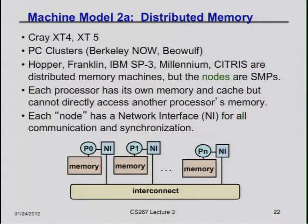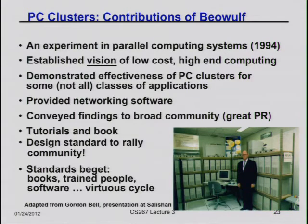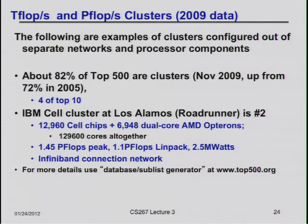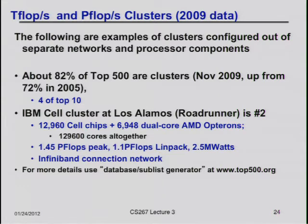Before that, supercomputers were built all special-purpose. This took off in the early 90s when people realized they could go to a store, buy as many commodity machines as they wanted, and glue them together over an internet — also available at the same store. Then all they had to supply was software tools for writing message-passing software. Looking at 2009 data, about 82% of the top 500 fastest computers in the world are built out of clusters like this — certainly the dominant architecture for big machines.